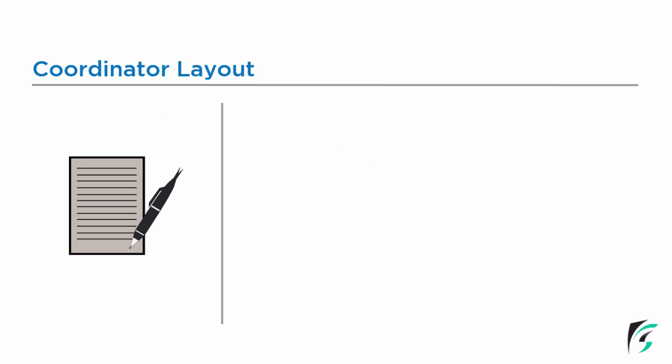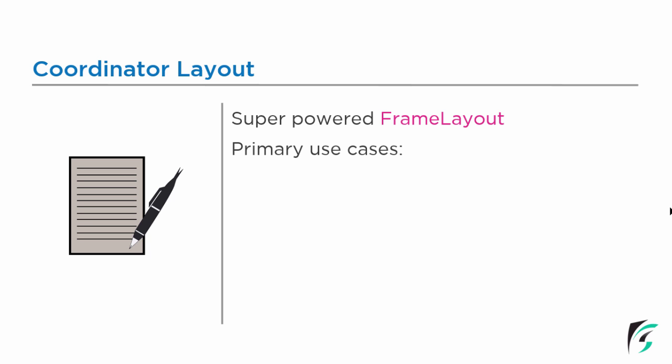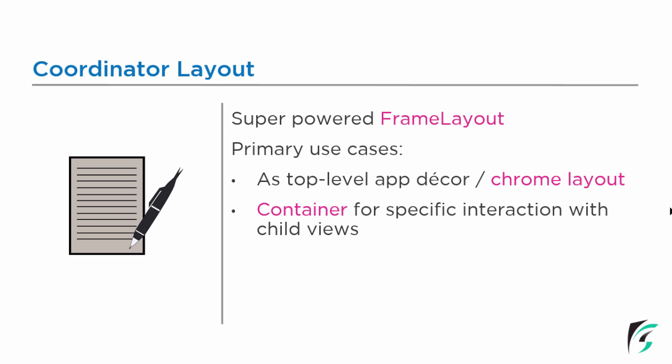So what is a coordinator layout and what are its features? Coordinator layout is a super powered frame layout, used primarily for two purposes. It is a top level app decor, also known as the chrome layout. It acts as a container for specific interaction with the child views or among the child views. By specifying the behavior for the child views of the coordinator layout, the interaction between different child views or between the parent view and the child view is achieved.